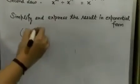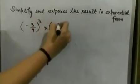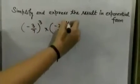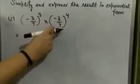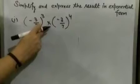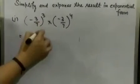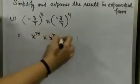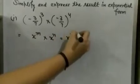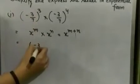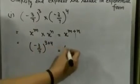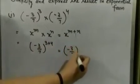Example one: minus 3 by 7 raised to power 3 multiplied by minus 3 by 7 raised to power 4. The first thing we ensure is that the bases should be same. There is a multiplication sign, so we go for the first law: x raised to power m multiplied by x raised to power n is equal to x raised to power m plus n. So the result is minus 3 by 7 raised to power 3 plus 4, which is minus 3 by 7 raised to power 7.